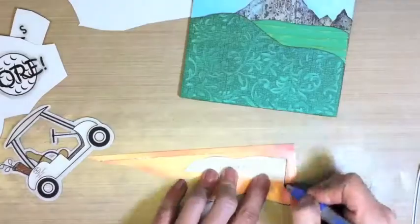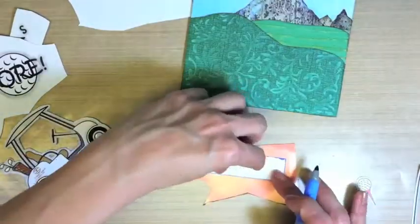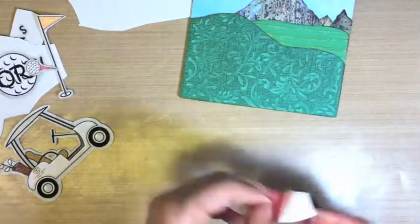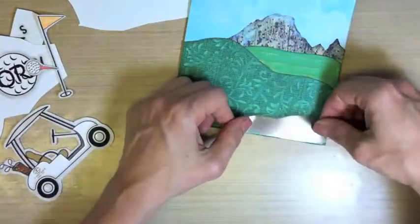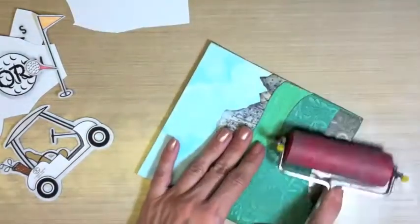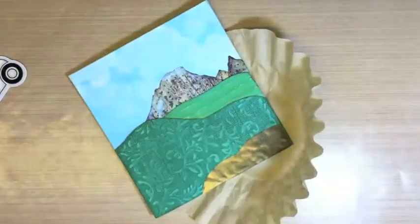For placement purposes, I'm using a piece of scrap paper to make a pattern for my green. Trace around it with a permanent marker on your adhesive sheet and then cut. Apply to the front of your card.